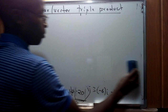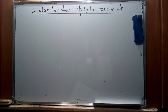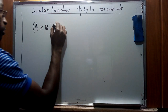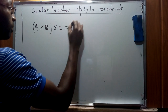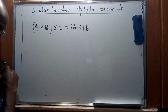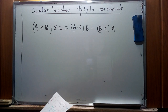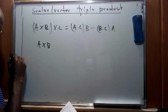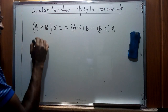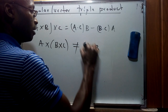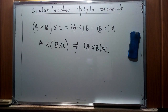We discussed two concepts and looked at finding the volume of the parallelepiped. We also mentioned that under the vector triple product, a × (b × c) is equivalent to (a · c)b − (b · c)a. And therefore, a × (b × c) is not equivalent to (a × b) × c. We can illustrate this using a specific example.